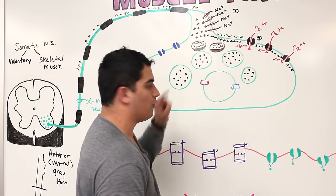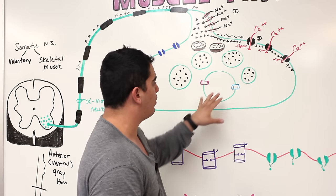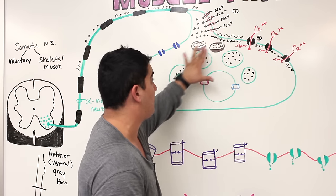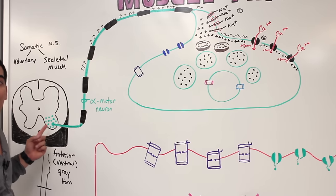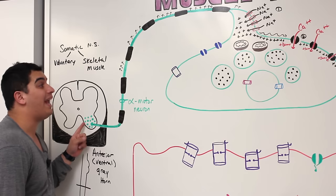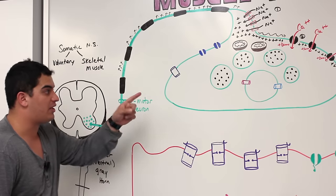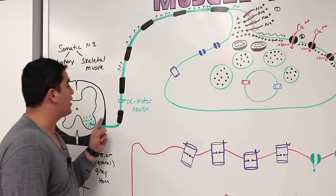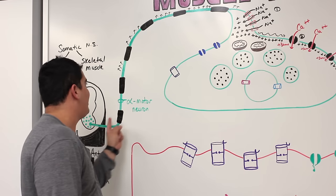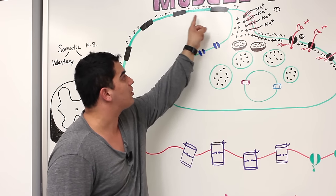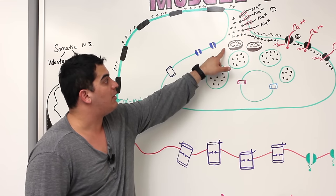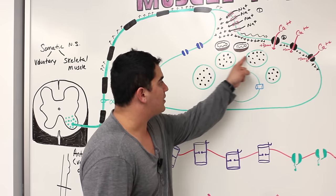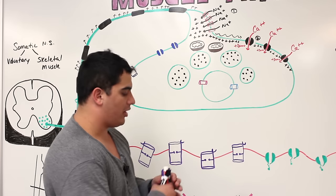At the synaptic bulb we have many green vesicles. An important question: where are these vesicles made? The vesicles are actually made in the cell body, specifically by the Golgi apparatus, and they may involve transcription and translation. They are moved down toward the synaptic bulb by anterograde axonal transport. Also being moved down from the cell body are mitochondria, which are present in large numbers at the synaptic bulb.